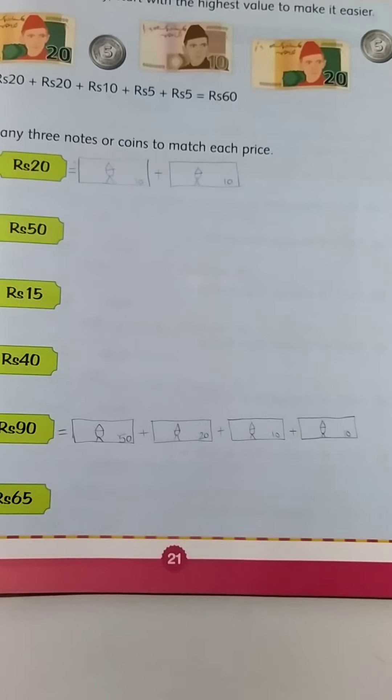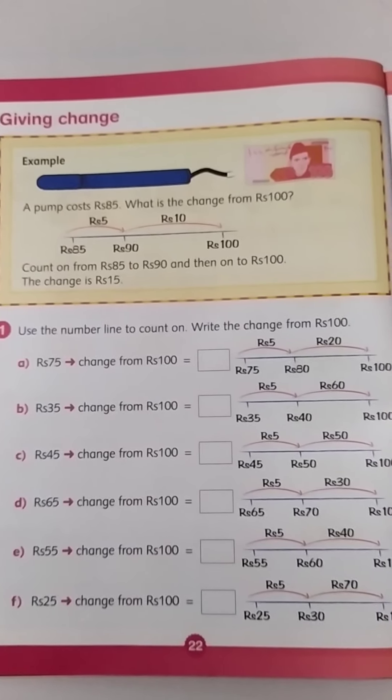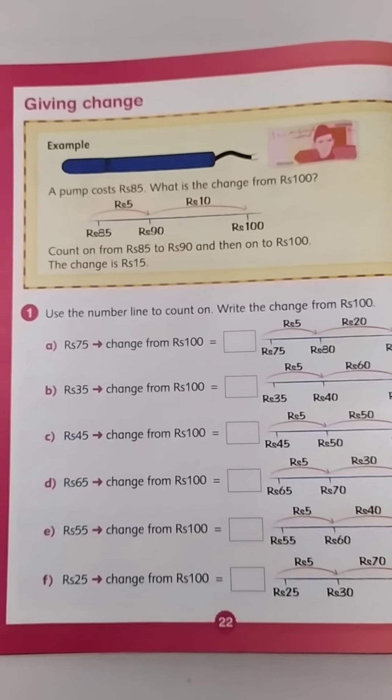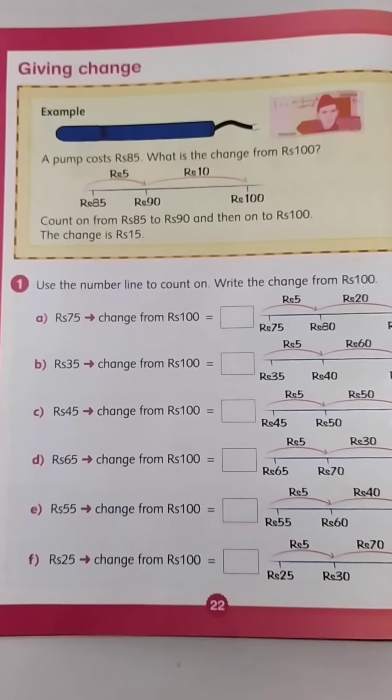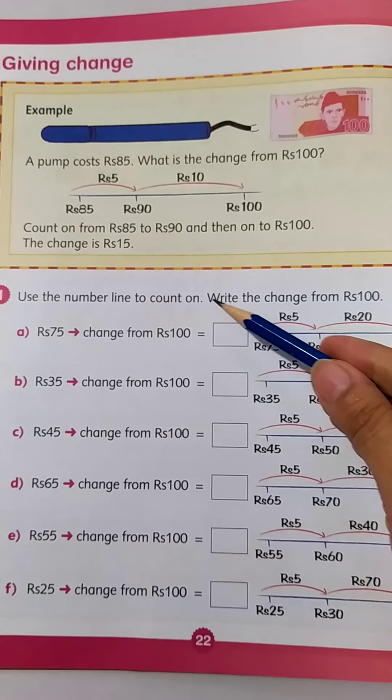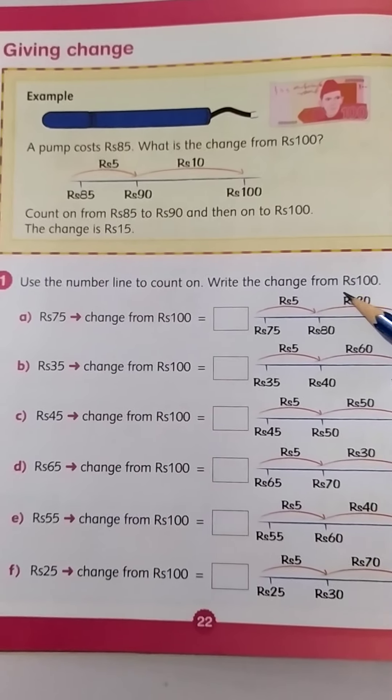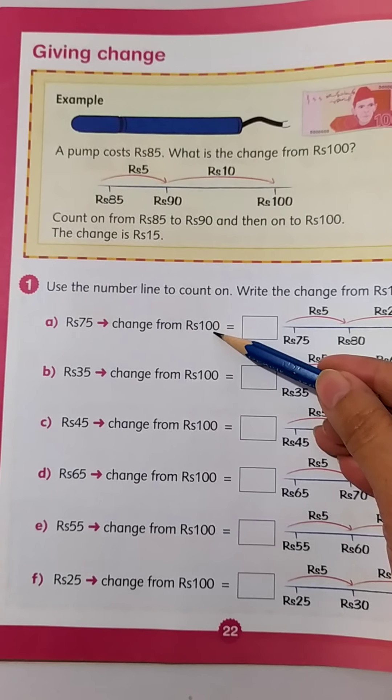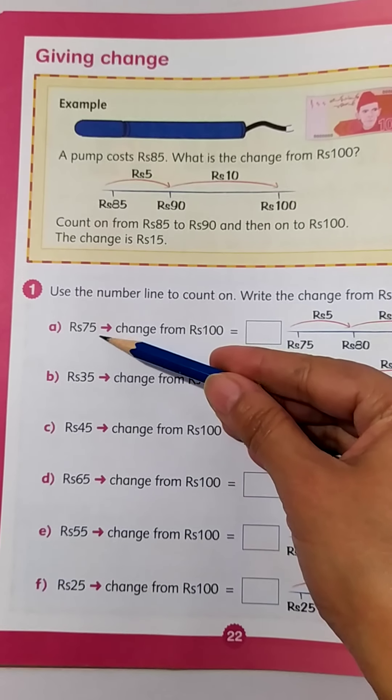Let's move to the next page. This is your next page, page 22. Now what are they asking? Use the number line to count on. Write the change from 100.